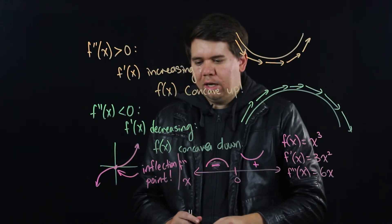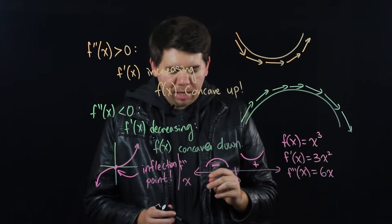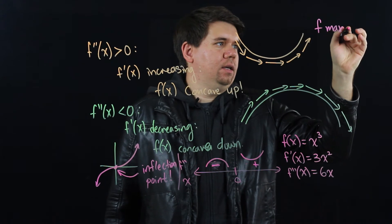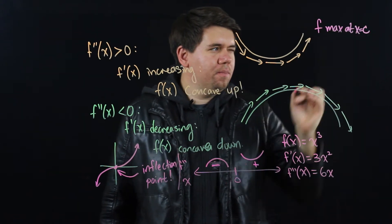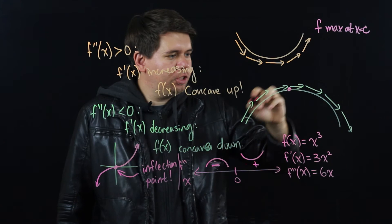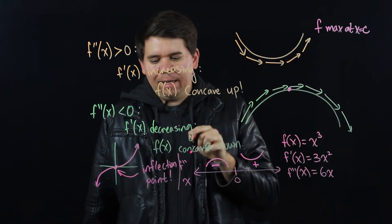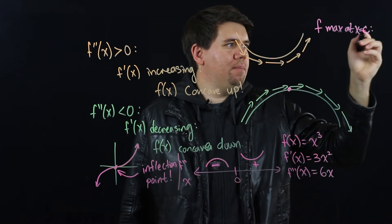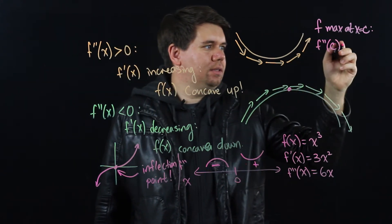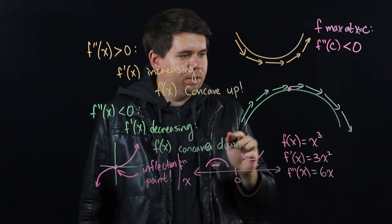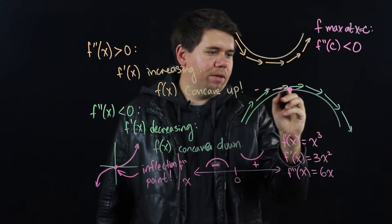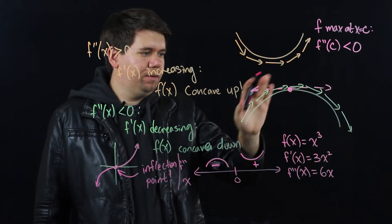One last thing about second derivatives: if some function has a maximum at x = c, you must be sitting at the top of some hill. That means your second derivative must be negative — not zero, but negative. The function is bending downward in order for you to sit at the top of the mountain. The first derivative may be zero, but your second derivative is negative.